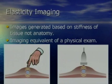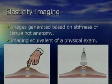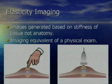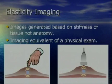What is elasticity imaging? It is an ultrasound image that is based not on the anatomy like B-mode imaging, but actually on the stiffness of tissues. You can consider it as the imaging equivalent of a physical exam — what we feel with a finger when we do a clinical exam, we're using ultrasound waves to generate a picture of that physical exam.